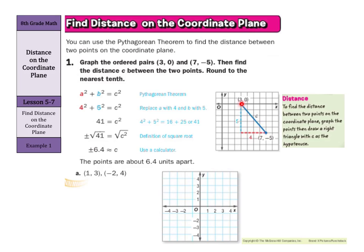Now we can try this on our own. We can graph the point (1, 3), which is right here. And we can graph the point (-2, 4), which is up here. And so now the distance that we're going to be looking for is this line here, which is really hard to count on the graph. So what we're going to do is to draw a line down and a line across so we can form a right triangle.